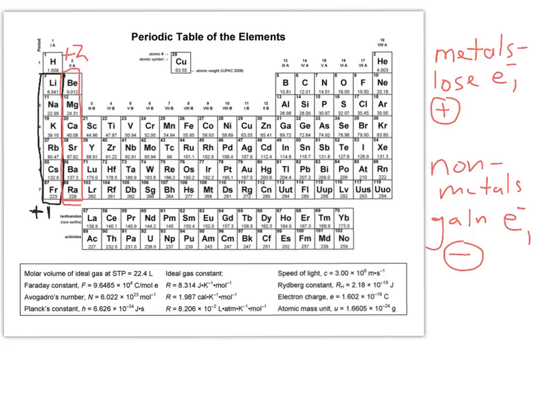So nitrogen has a tendency, phosphorus, the group 5A elements have a tendency in ionic compounds to form minus three charges.